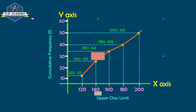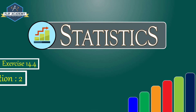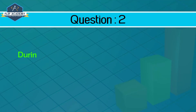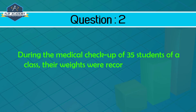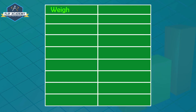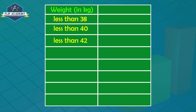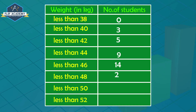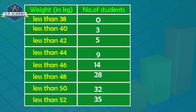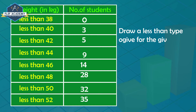Question 2: During the medical checkup of 35 students of a class, their weights were recorded. Weight in kg (less than type): less than 38, 40, 42, 44, 46, 48, 50, 52. Number of students: 0, 3, 5, 9, 14, 28, 32, 35. Draw a less than type ogive for the given data.